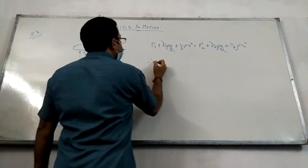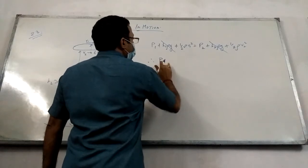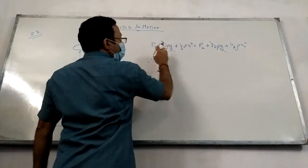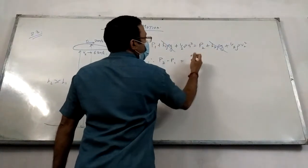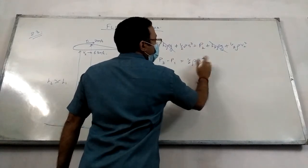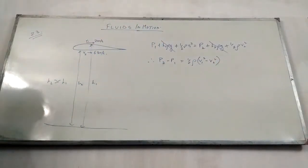So the pressure difference, P2 minus P1 - which one has higher speed? P2 minus P1 will be half rho V1 square minus V2 square.